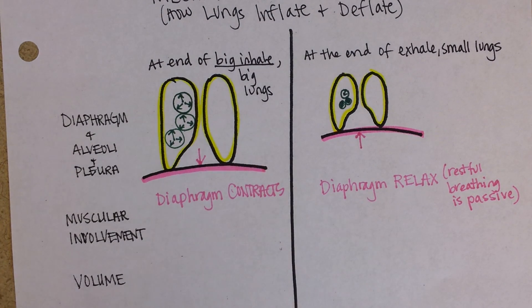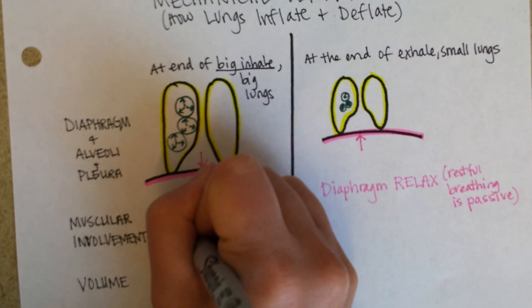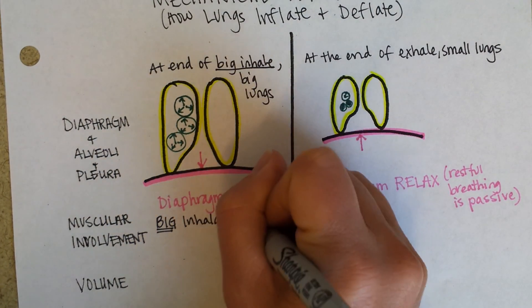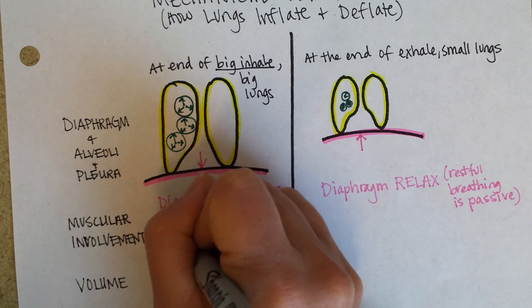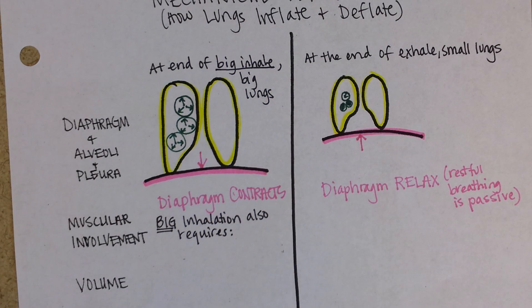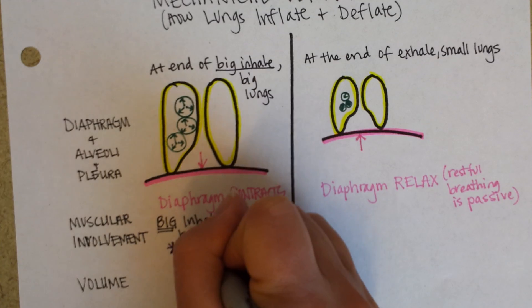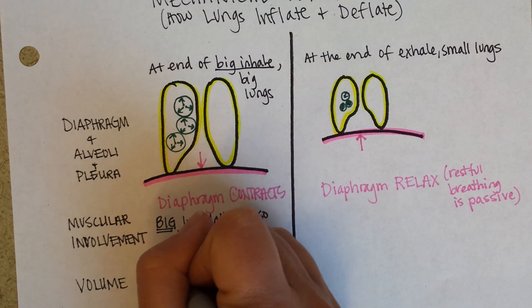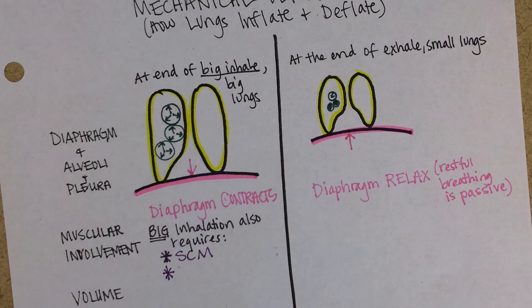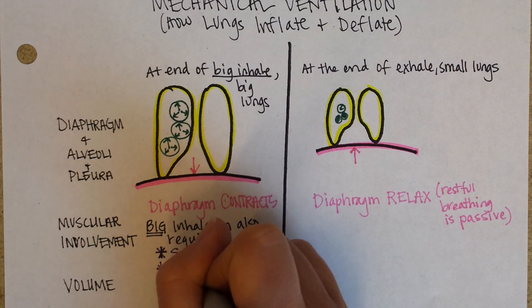Now what about if you want to have a big inhalation? Other muscles, for example, the sternocleidomastoid, which you guys know from 241 as the SCM. And also rib meat. You've ever eaten ribs, right? Well, those are muscles.